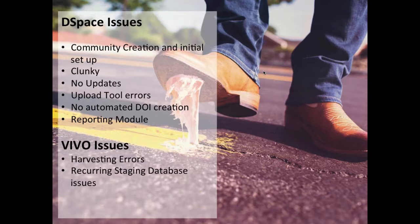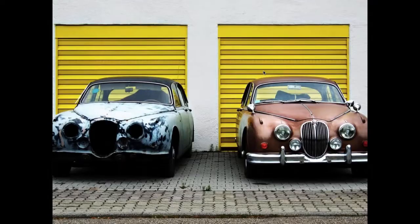There are consistent upload tool errors with a dated appearance and functionality. DOI creation is a manual process — it's not done automatically when researchers upload their datasets — and there's no reporting mechanism, so everything needs to be done manually. DSpace needs Vivo to work hand-in-hand to harvest into ANS, but there are consistent harvesting errors and recurring issues with the staging database used to link datasets, people, grants, and publications. It's an ageing system — it's served us well, but it's definitely time for a change.